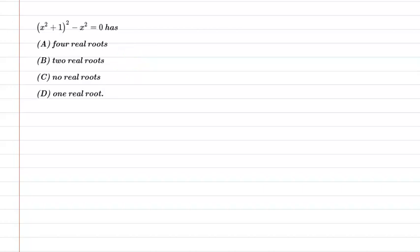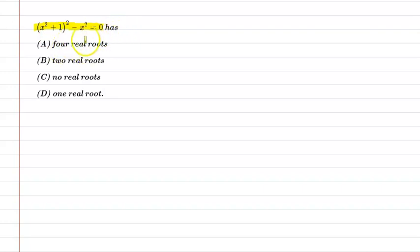Hello students, let us understand the following question. The question says (x² + 1)² - x² = 0. In this equation, according to options a, b, c, d, we need to determine the condition — that is, 4 real roots, 2 real roots, no real roots, or 1 real root. We need to check this equation.